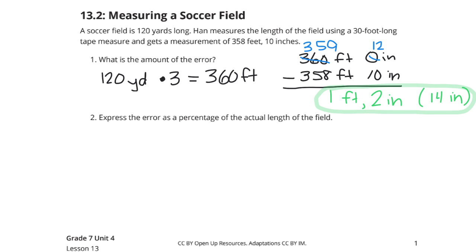Express the error as a percentage of the actual length of the field. So we need to take our error, our amount of error, and divide it by our actual length of the field. Now, our error we found to be 14 inches.